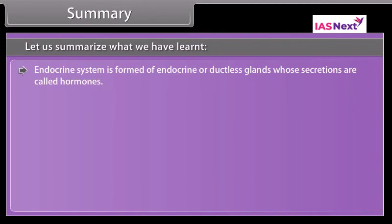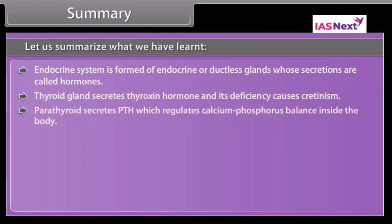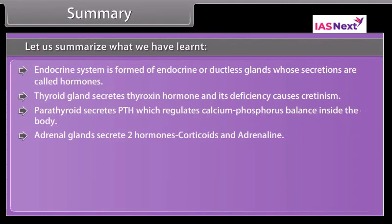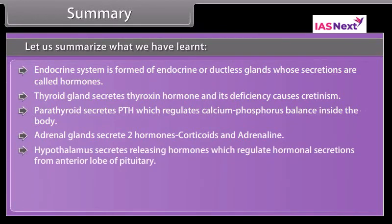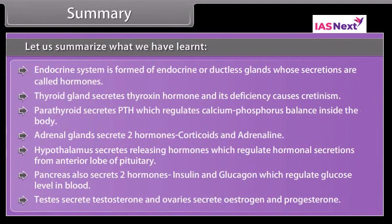The endocrine system is formed of endocrine or ductless glands whose secretions are called hormones. Thyroid gland secretes thyroxine and its deficiency causes cretinism. Parathyroid secretes PTH which regulates calcium-phosphorus balance in the body. Adrenal glands secrete two hormones: corticoids and adrenalin. The hypothalamus secretes releasing hormones which regulate hormonal secretions from the anterior lobe of the pituitary. Pancreas secretes insulin and glucagon which regulate glucose level in blood. Testes secrete testosterone and ovaries secrete estrogen and progesterone.